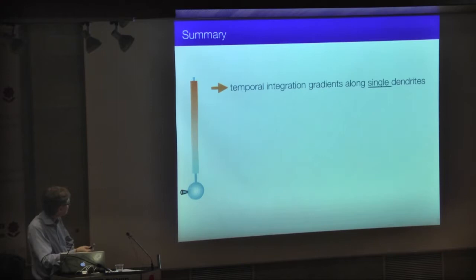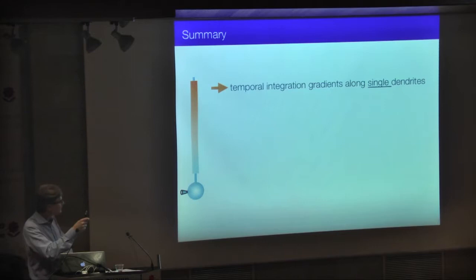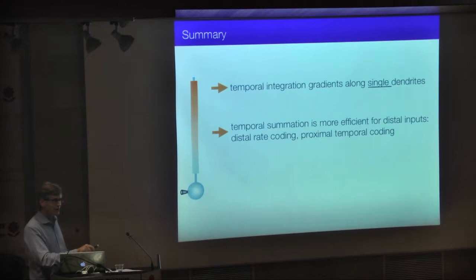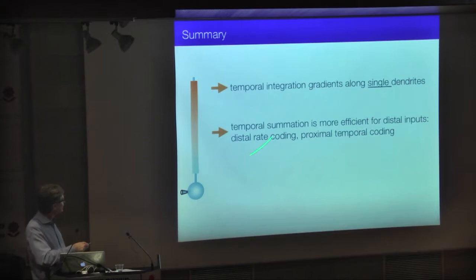Distal inputs overcome their electrotonic disadvantage: the higher sensitivity of distal inputs combined with their insensitivity to millisecond timing means that you can actually get more spikes from distal inputs than from proximal inputs. This allows us to reconcile the ongoing debate between rate coding and temporal coding in pyramidal cells — single neurons and even single dendrites can do both, depending on the distribution of input patterns along individual dendrites.